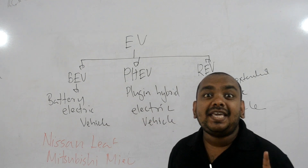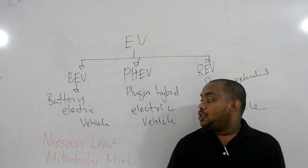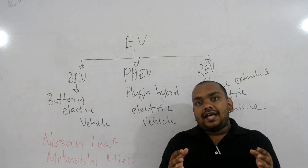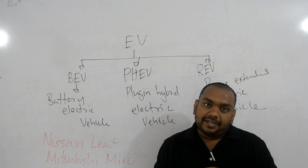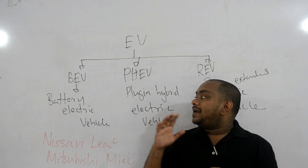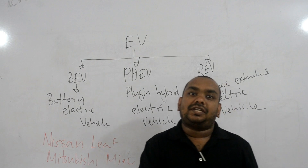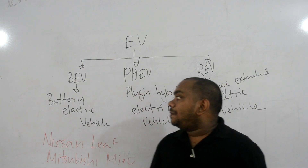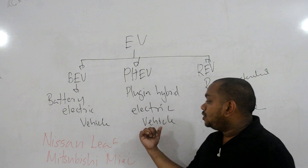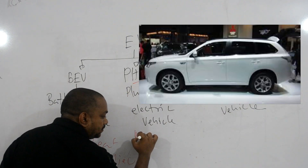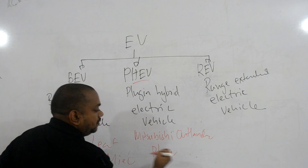When it comes to PHEV — the Plug-in Hybrid Electric Vehicle — it is not just a PHV (Plug-in Hybrid Vehicle). A PHV is a normal hybrid vehicle with an option to charge the battery using domestic electricity. But a PHEV is an electric vehicle which has a hybrid function with an internal combustion engine. The main example for PHEV is the Mitsubishi Outlander PHEV.